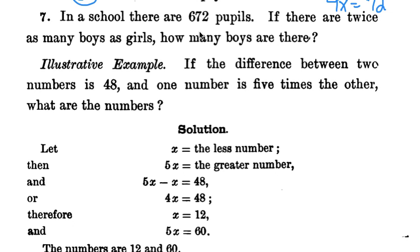Number 7. In the school, there are 672 pupils. If there are twice as many boys as girls, how many boys are there? Again, less information about girls. Twice as many boys. Total is 672. So 2x plus x is 672. 2x plus x is 3x is 672. I'll just keep going down here. Divide both sides by 3. 672 divided by 3 is 224. And we just want to make sure that we're answering what they ask us. How many boys are there?